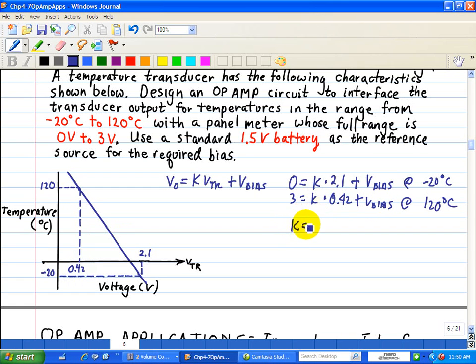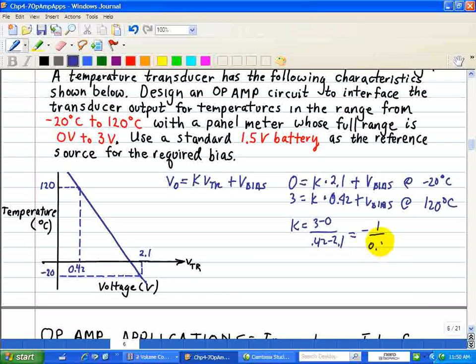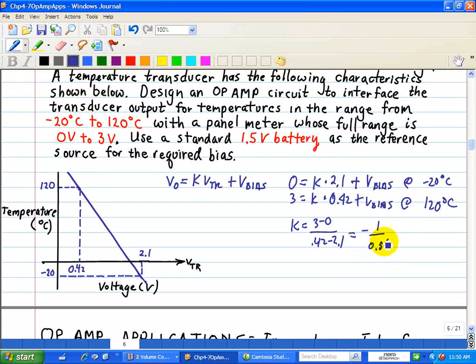we have K is equal to 3 minus 0, all over 0.42 minus 2.1, or negative over 0.56.